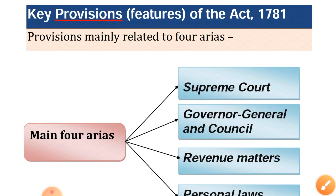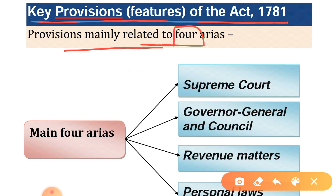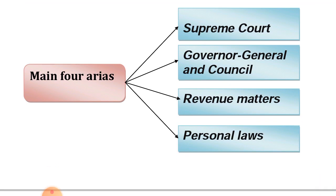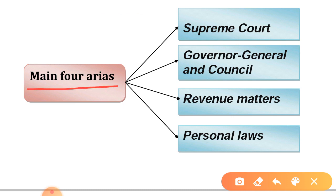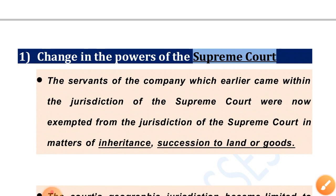The key provisions of the Act 1781 were mainly related to four areas: first, the Supreme Court; second, the Governor General and Council; third, revenue matters; and fourth, personal laws. Let's see each one by one.